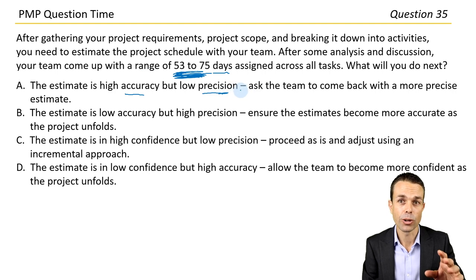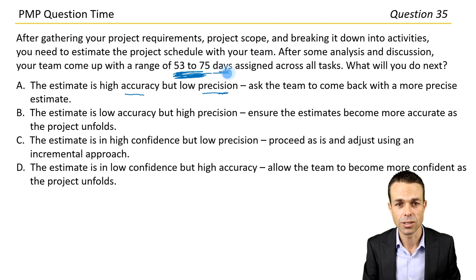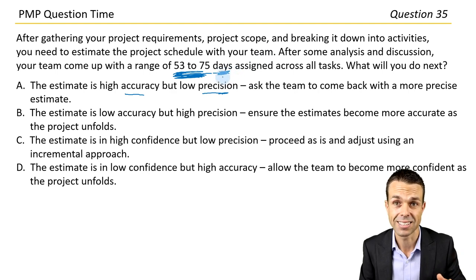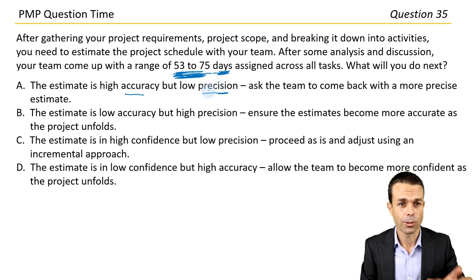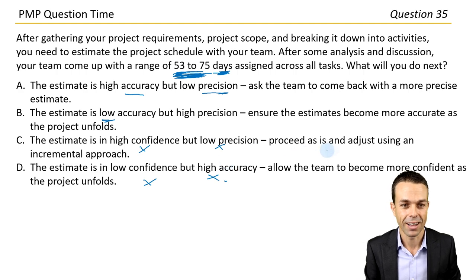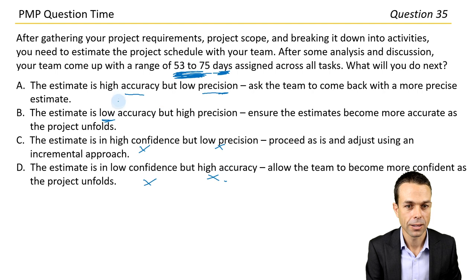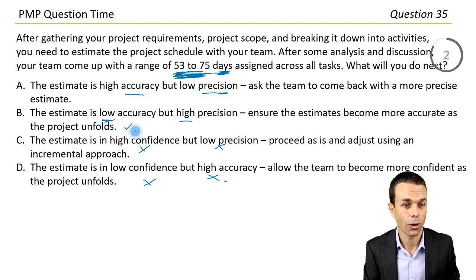Precision is more about how exact it is — is it sometime next week or is it a specific day, like Wednesday, in days or hours or minutes. The precision here is pretty good: we're saying it's a specific number of days, not sometime between now and November. So we have low accuracy and high precision. Options mentioning 'confidence and precision' are not real combinations — those are red herrings. Low accuracy and high precision means we should ensure the estimates become more accurate as the project unfolds. Answer B.